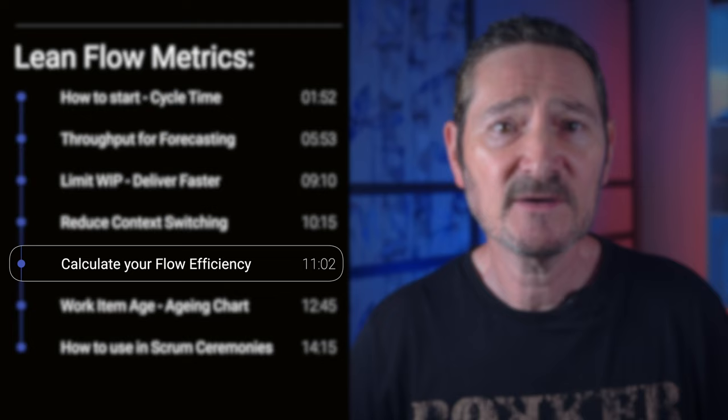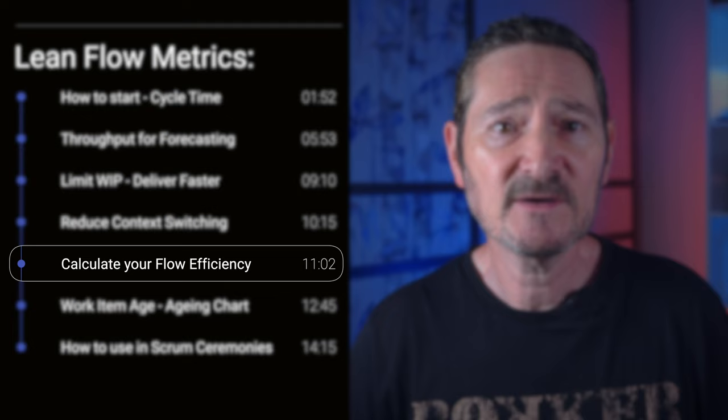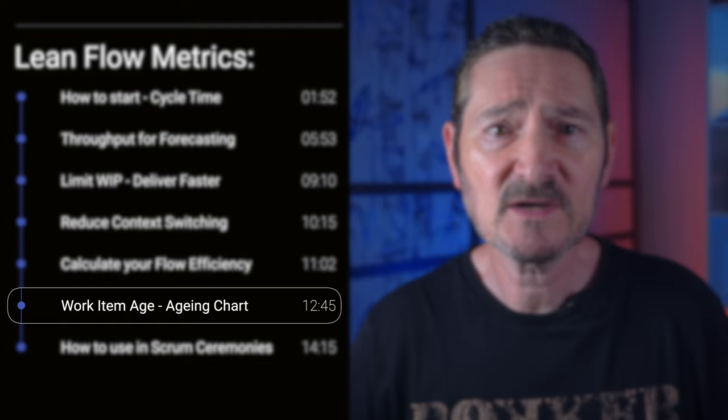I've broken this into chapters which you can find in the description below so you can skip to the relevant parts easily, but I'd highly recommend you don't skip the cycle time chapter because in many ways it is the most important. Here's what I'm going to cover: how to start by understanding your cycle time, calculate your throughput to allow you to forecast, limit work in progress to deliver faster, reduce context switching to increase speed and quality, calculate your flow efficiency to identify queues and handoffs, understand your work item age to keep you on track, and finally how to use lean flow metrics in your Scrum ceremonies.